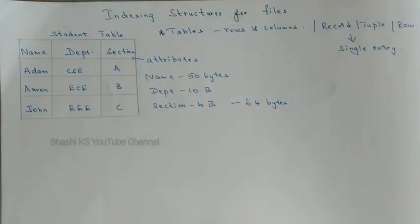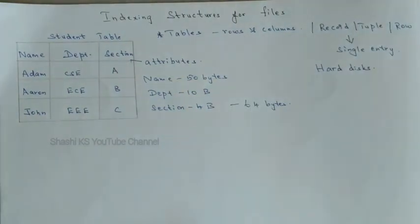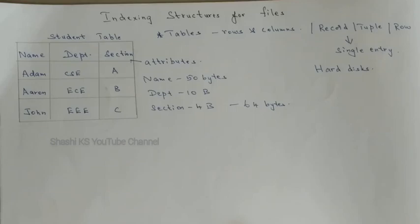The student table has three tuples or three records. DBMS stores the database information in the hard disk. It cannot reside in RAM or main memory because main memory is volatile — as soon as we switch off the computer, all data stored in RAM gets lost. It's also costly to store the entire database in RAM. So data has to be in RAM for the DBMS to operate on it.